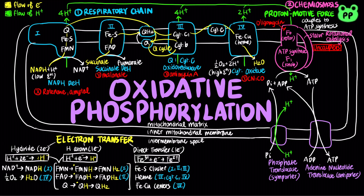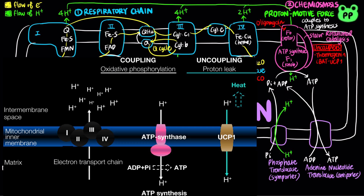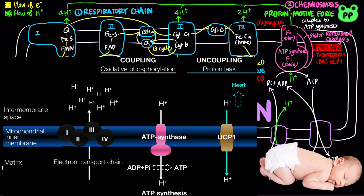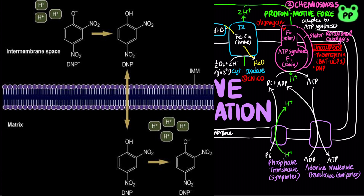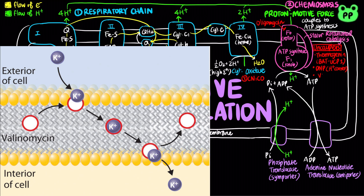Thermogenin is a mitochondrial carrier protein found in brown adipose tissue, also known as BAT. It is also known as uncoupling protein 1 or UCP1. It increases the permeability of the inner mitochondrial membrane, which decreases the proton gradient generated in oxidative phosphorylation, uncoupling proton motive force and ATP synthesis. As a result, the free energy stored in proton motive force is released as heat, a mechanism known as non-shivering thermogenesis used by babies to counter heat loss. DNP, or 2,4-dinitrophenol, is a hydrophobic proton carrier that also decreases the proton gradient, uncoupling proton motive force and ATP synthesis. Valinomycin is a potassium ionophore that facilitates the movement of potassium ions out of the mitochondrial matrix, decreasing the electrogradient in proton motive force and thereby decreasing ATP synthesis.